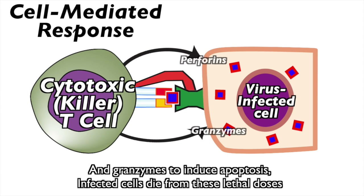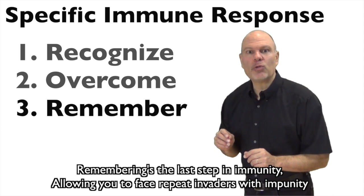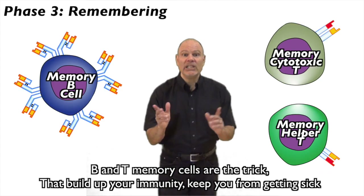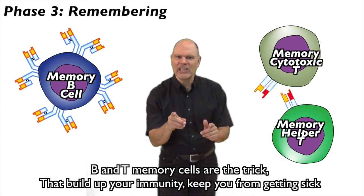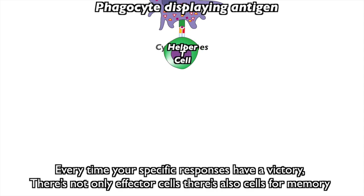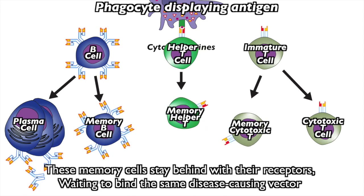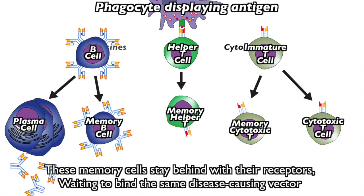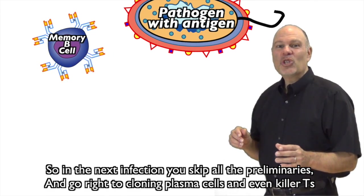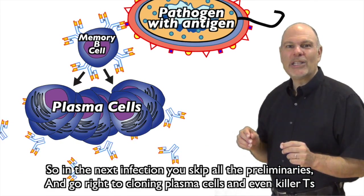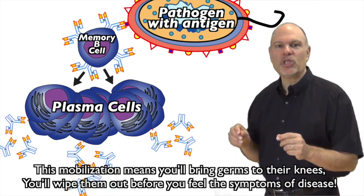Remembering is the last step in immunity, allowing you to face repeat invaders with impunity. B and T memory cells are the trick that build up your immunity and keep you from getting sick. Every time your specific responses have a victory, there are not only effector cells but also memory cells. These memory cells stay behind with their receptors, waiting to bind the same disease-causing vector. So in the next infection you skip all the preliminaries — go right to cloning plasma cells and killer T's.